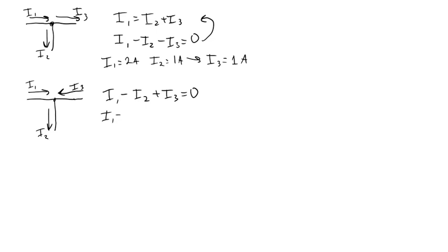But if you still have I1 equals 2 amps and I2 equals 1 amp, when you plug them into that equation, you get 2 minus 1 plus I3 equals zero. So you'll get I3 equals negative 1 amp.